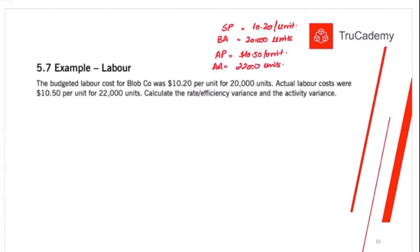Now first calculate the total variance. To calculate the total labor variance, compare budgeted against the actual. So budgeted activity into standard price, how much will this be? 20,000 units into 10.20. How much we will get? 204,000 dollars. Yes, 204,000.